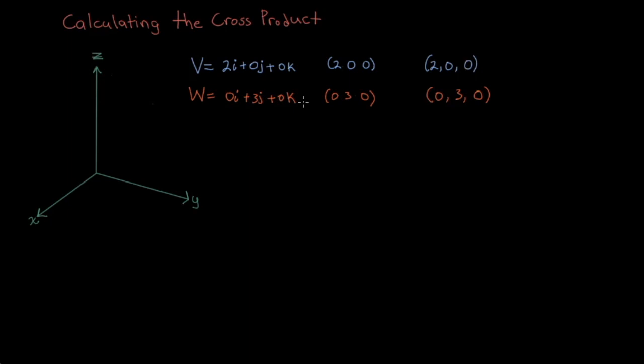So what exactly is the cross product of two vectors? Well, in simple terms, the cross product, also known as the vector product, is the axis that is perpendicular to both those vectors. In this example, V conveniently lies on the x-axis and W conveniently lies on the y-axis. Now what's perpendicular to both the x and y-axis? Well, it's the z-axis.